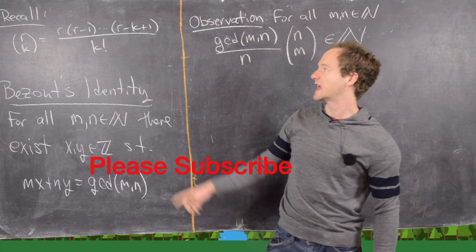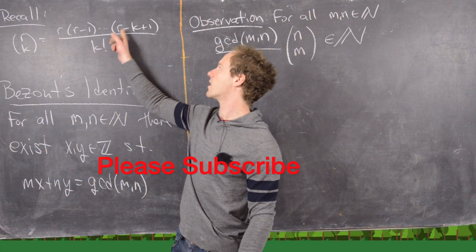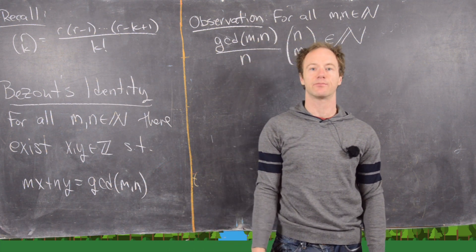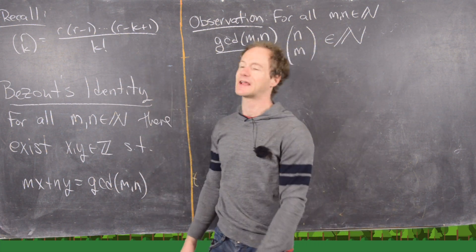So the first thing we want to do is recall the binomial coefficient. So r choose k is r times r minus 1 all the way down to r minus k plus 1 over k factorial.